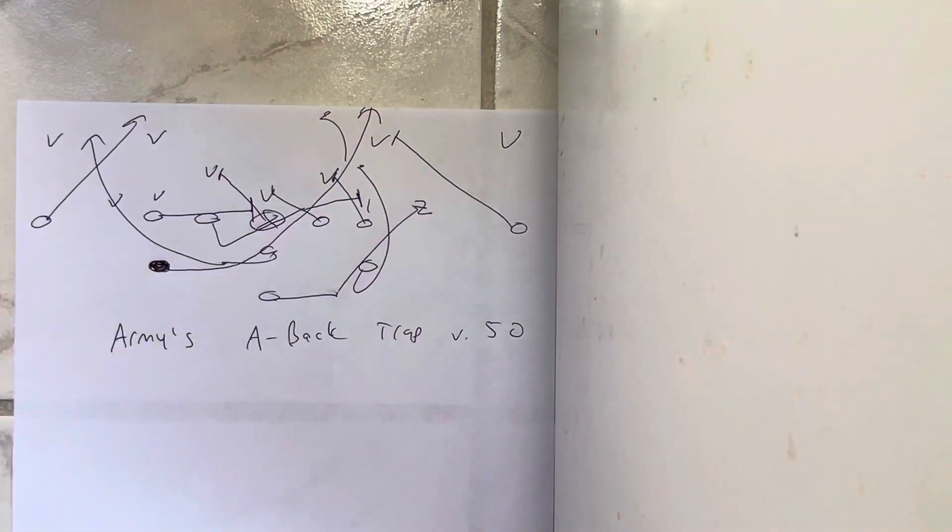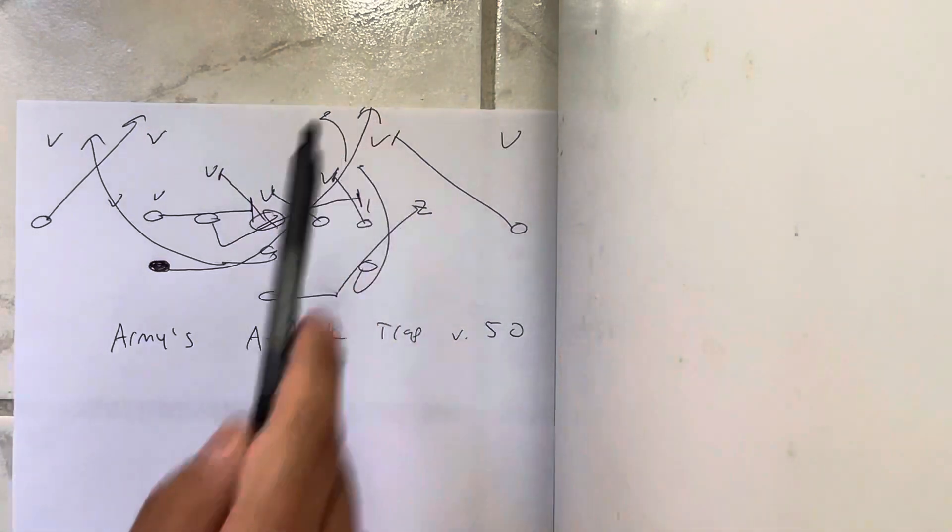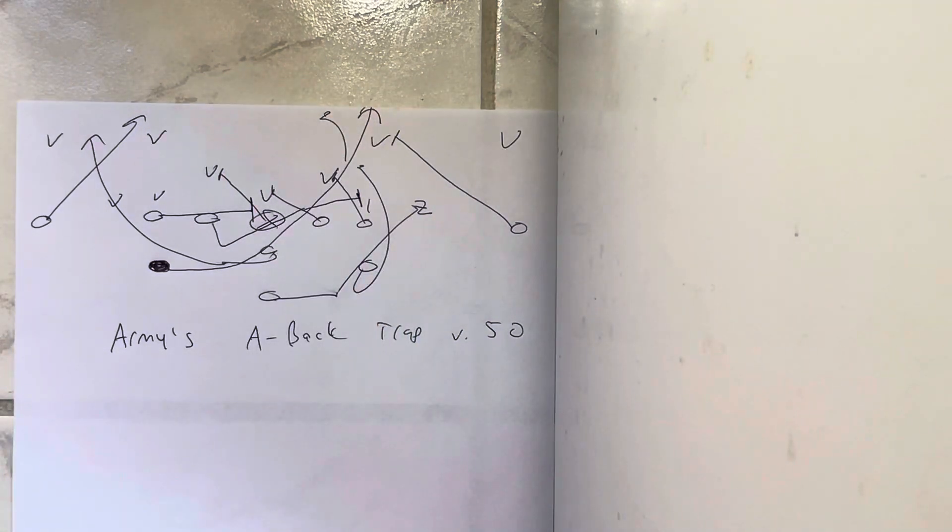Then the quarterback is going to carry out the fake. So you're given a great element of misdirection. You've got the quarterback reversing out and going that way. You've got the A-back going that way. You've got Toro Mojo.